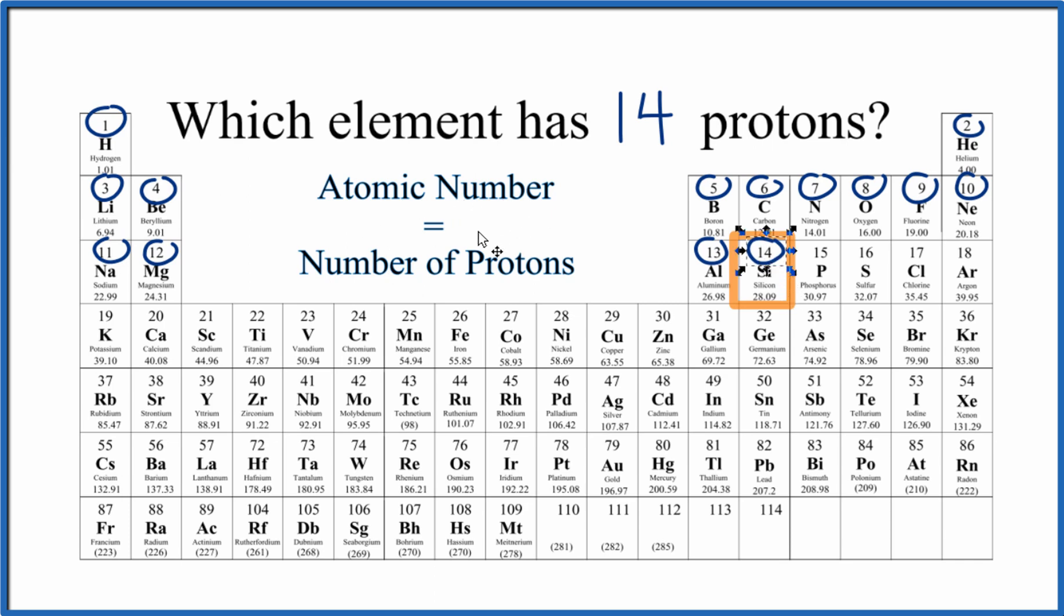So remember, the atomic number, that's this number above the element symbol, equals the number of protons. You can figure that out. Which element has 14 protons? It has the atomic number of 14, and that's silicon.